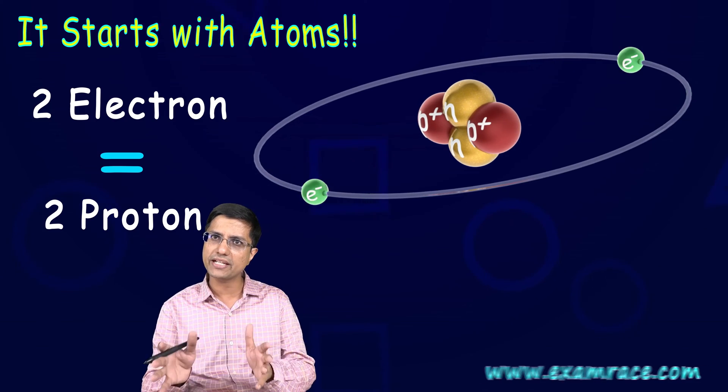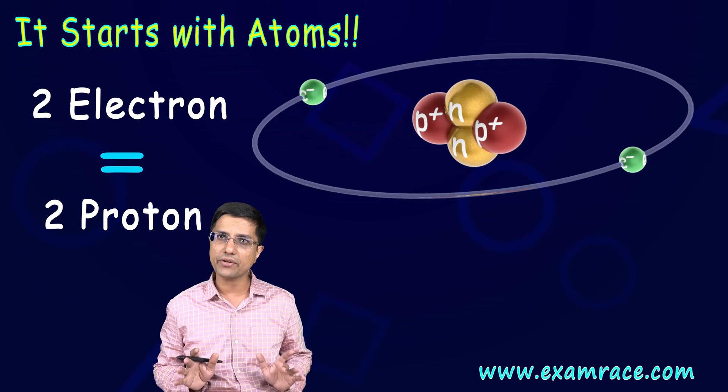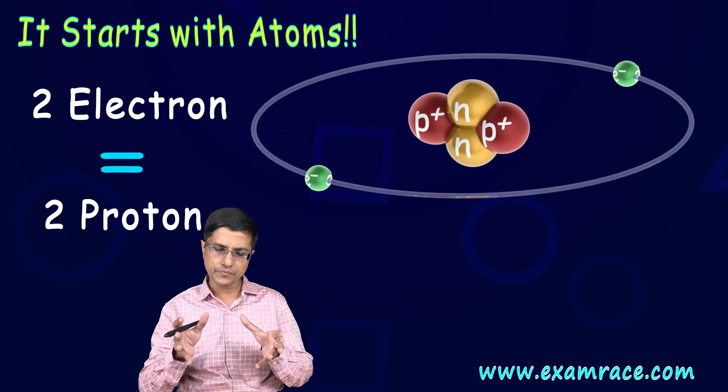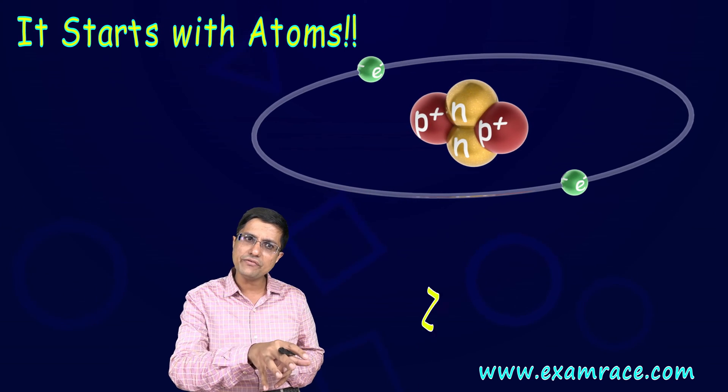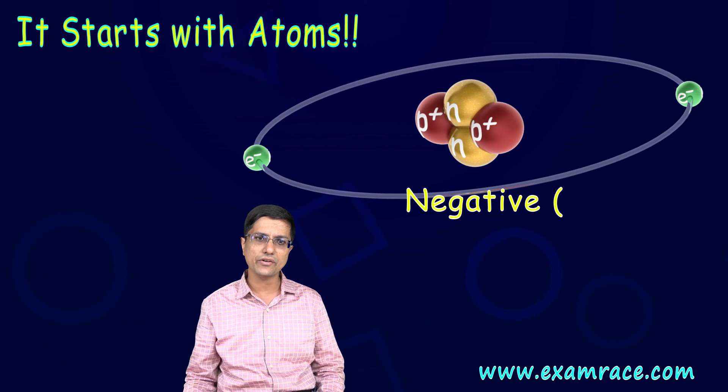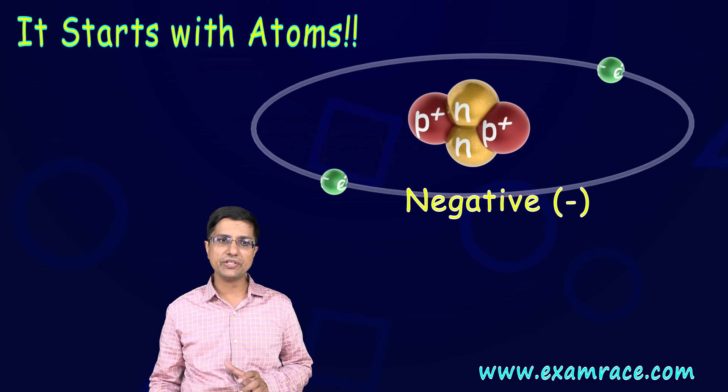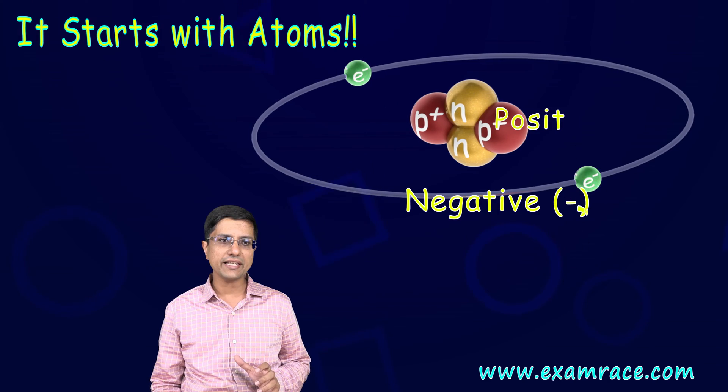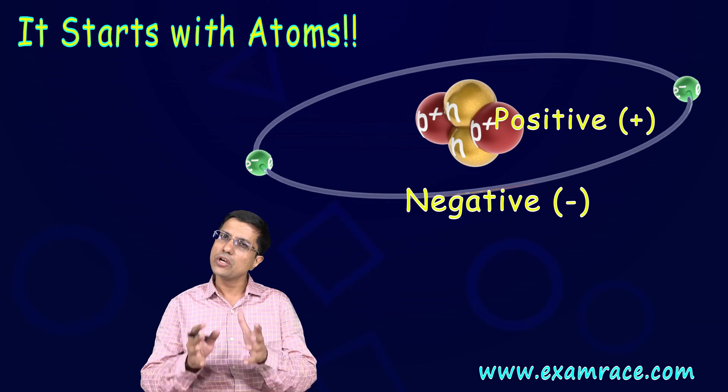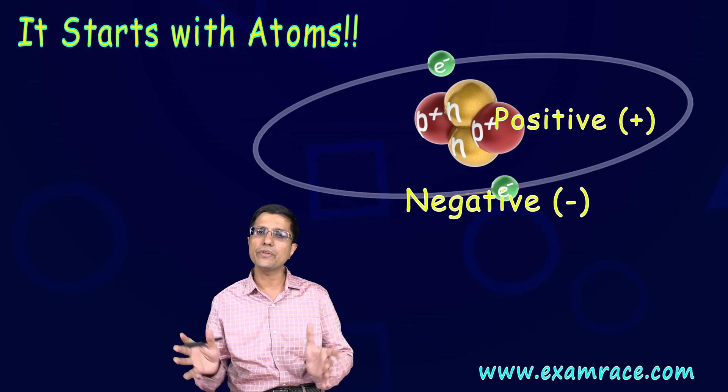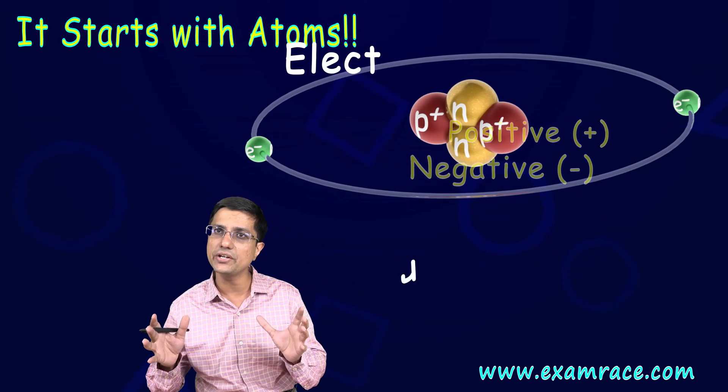We'll just call it one unit of charge. Whatever it is, we are not bothered about the exact value. So what would happen? The negative charges outside in the electrons would be completely balanced by the positive charges inside in the nucleus. So on the whole if you look at the atom, it would be what we say electrically neutral.